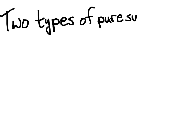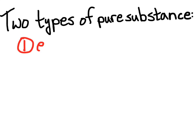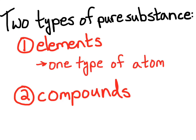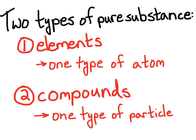We'll look at the different types of pure substances. There are really just two types: the first is elements — all elements are pure substances — and the second type is chemical compounds. Elements are pure substances made up of just one type of atom, and compounds are pure substances made up of just one type of particle, not one type of atom but one type of particle.